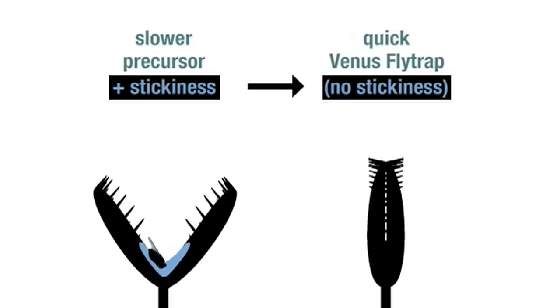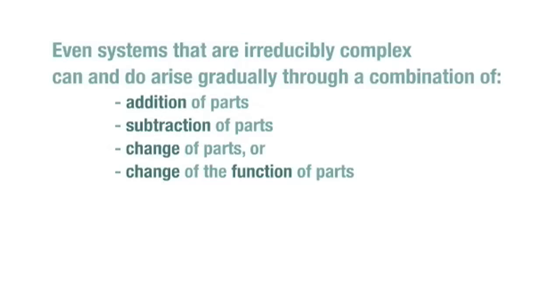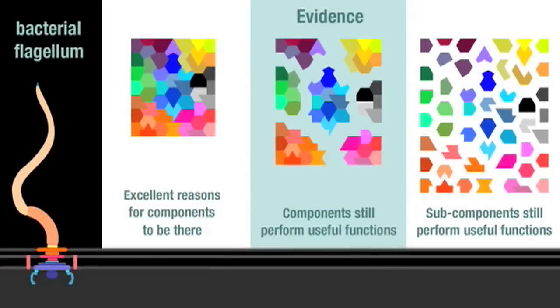I also stated quite unambiguously how even systems that are irreducibly complex can and do arise gradually through a combination of addition, subtraction, change of parts and or change of the function of parts. During my discussion of the bacterial flagellum, I also pointed out how beneficial secondary functions of component parts provide excellent reasons for them to be there, thus providing a pathway to the later system.